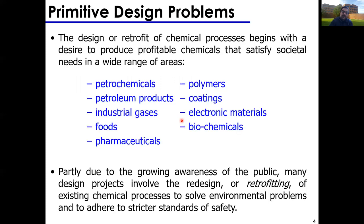Let's get started by talking about steps in process design. Design is motivated by primitive design problems — either designing a chemical plant from scratch or retrofitting an existing one — always driven by a desire to make profitable chemicals that meet societal or industrial needs. As a chemical engineer you can work in petrochemicals, polymers, coatings, pharmaceuticals, and more. As long as you remember your fundamentals — mass balance, continuity equation, thermodynamics — you can move between industries.